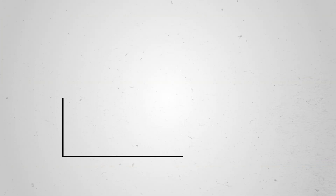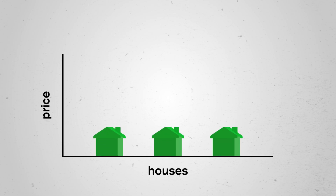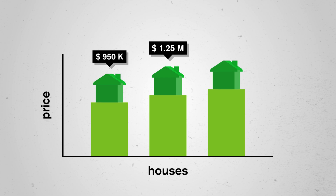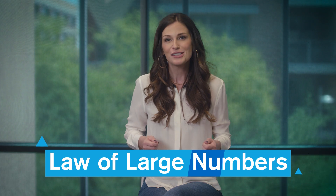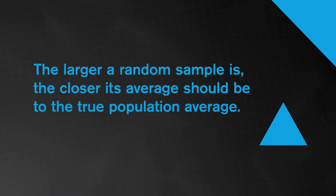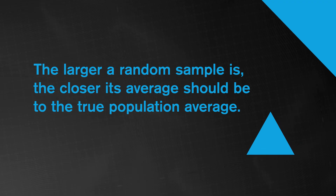If we could only find listings for three houses in a neighborhood, would we really trust any statistic we'd calculate? Even the median price to truly represent the many other houses in the neighborhood? With only three houses, it's possible we ended up with three oddball houses, and their median won't help us understand the neighborhood at all. Personally, I'd feel a lot better about the median price if it was calculated from 300 houses. The law of large numbers is a real law, at least in the world of probability, that says the larger a random sample is, the closer its average should be to the true population average. So basically, don't jump to conclusions with only a little data.